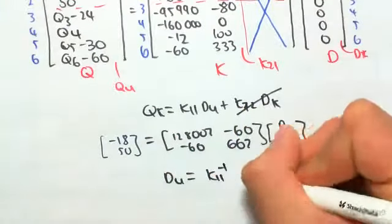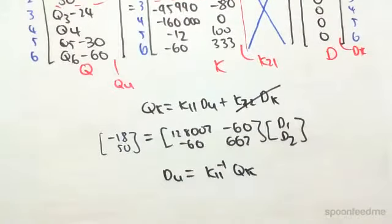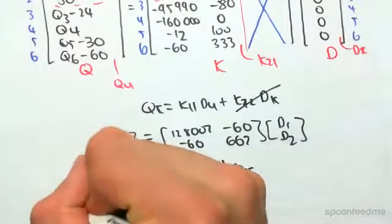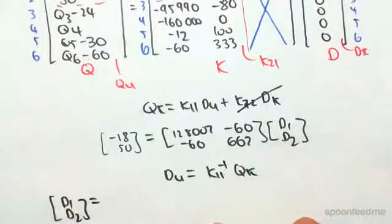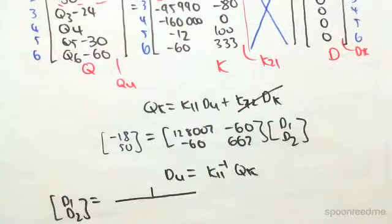D unknown equals the inverse of K11 times Q known. So we have [D1, D2] equaling the inverse of K11 times Q known. This is an advanced video, so I'm assuming you know how to find the inverse of a 2 by 2 matrix.